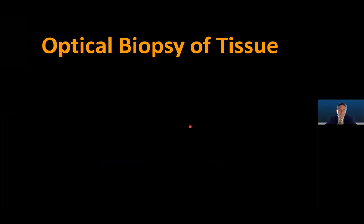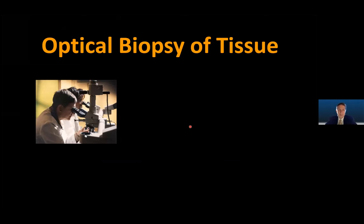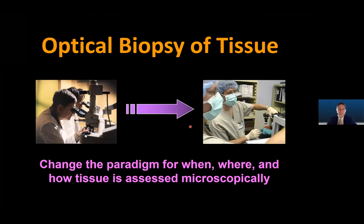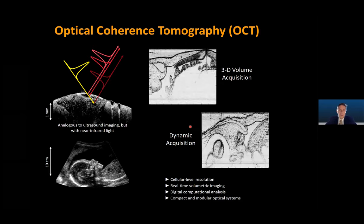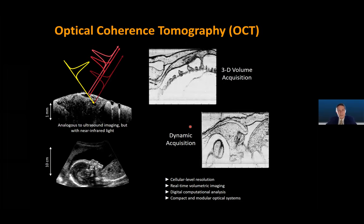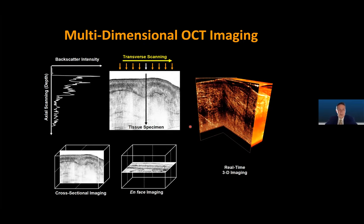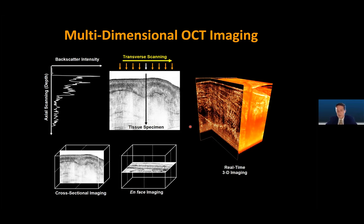In general, what we're trying to do is perform optical biopsies of tissue. Traditionally, biopsies are looked at under a microscope in the pathology lab. We asked: can we change the paradigm for when, where, and how we assess tissue microscopically? Can we do that at the point of procedure in real time, without the lengthy process that histology uses? One way we do this is with optical coherence tomography, or OCT — the optical analog to ultrasound. We send in light waves and collect the reflections to build 2D time-lapse or 3D images of structures based on their optical scattering properties. These are label-free, high-resolution techniques that allow us to rapidly scan tissue and get very good depth-resolved structural images.